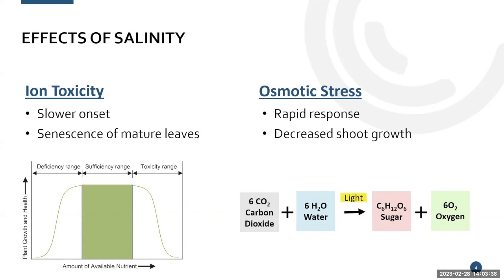The first is ion toxicity. Normally with any nutrient, you can have a deficiency — not enough growth because you lack the nutrient. With a sufficient amount, you get the best yield. But you can have too much of a good thing. With salinity comes sodium and chloride, or other salts such as magnesium or calcium sulfates, that become too much for the plant. This is called ion toxicity — it builds up in the leaves and the plant is no longer able to function.